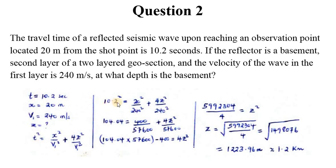We have t² which is 10.2² equal to x of 20² over 240² plus 4z² over 240². So this actually results into 104.04 equals 400 over 57,600 plus 4z² over this. This value is common so we can bring this to the other side.